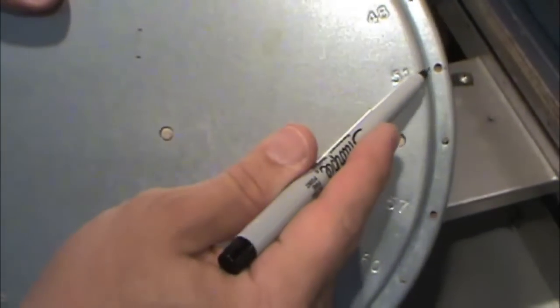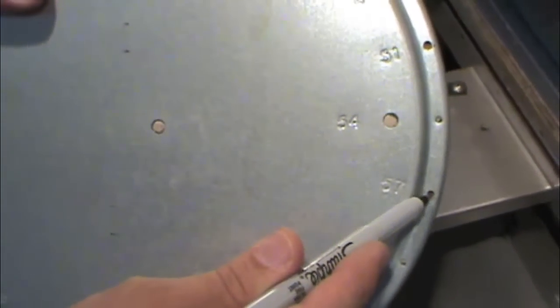With the bracket removed, you may want to go ahead and mark with a marker where the screws are going to go in for the bracket for the new burner.